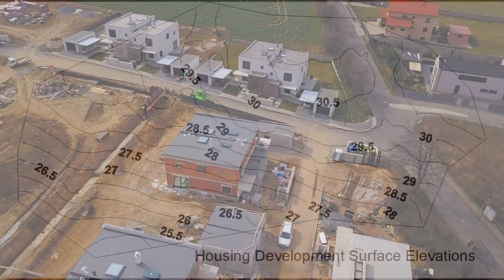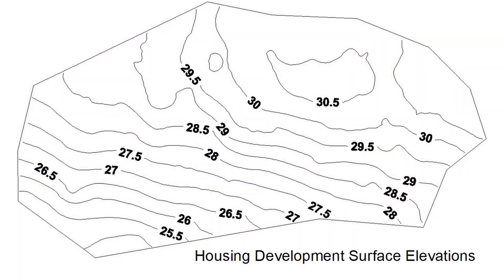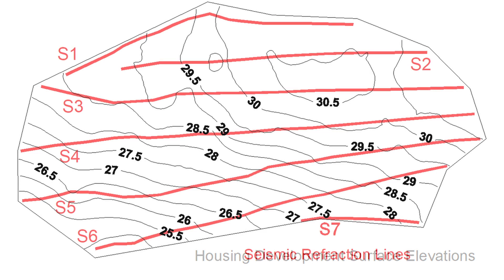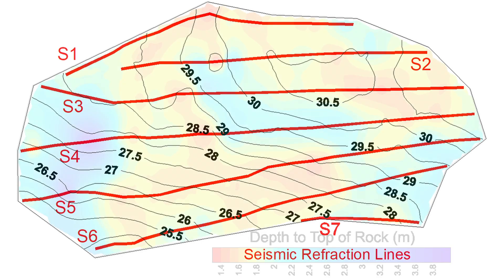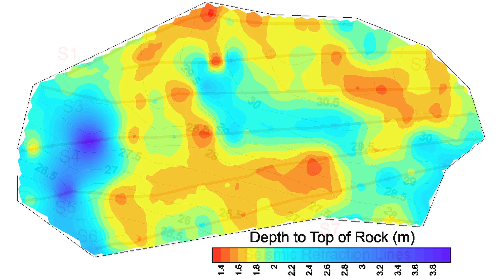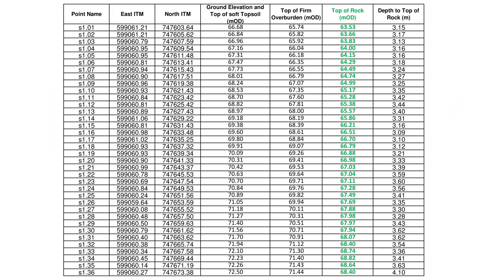Parallel survey lines for a site development can be combined in a 3D database and contour display to show the zones of shallow and deep rock. The data is compiled into an XYZ file for use in Civil 3D or similar software applications.